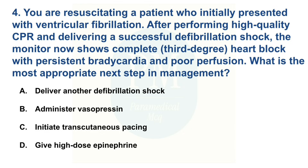You are resuscitating a patient who initially presented with ventricular fibrillation. After performing high quality CPR and delivering a successful defibrillation shock, the monitor now shows complete 3rd degree heart block with persistent bradycardia and poor perfusion. What is the most appropriate next step in management? Option A: Deliver another defibrillation shock. Option B: Administer vasopressin. Option C: Initiate transcutaneous pacing. Option D: Give high dose epinephrine. The correct option is Option C: Initiate transcutaneous pacing.